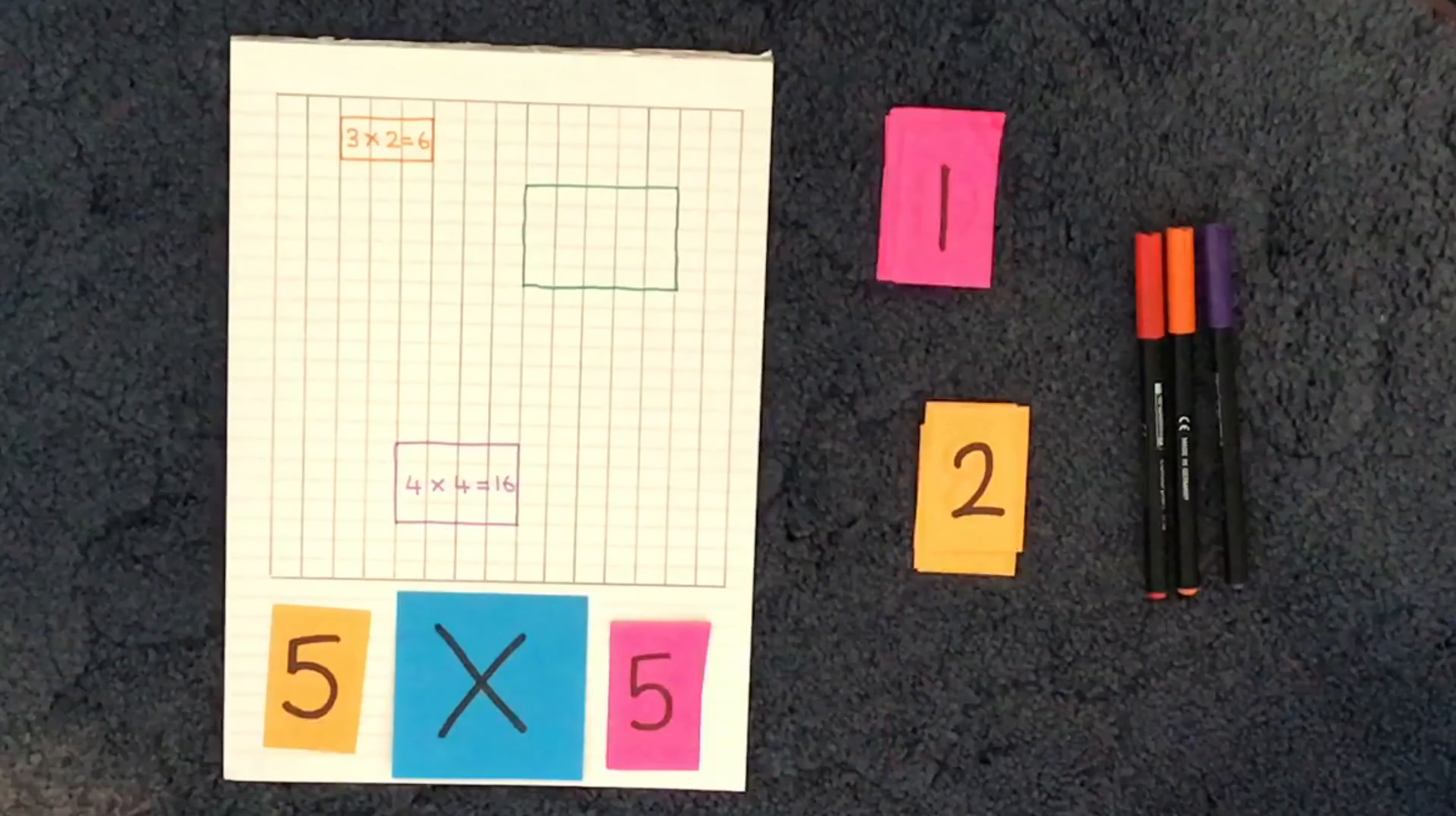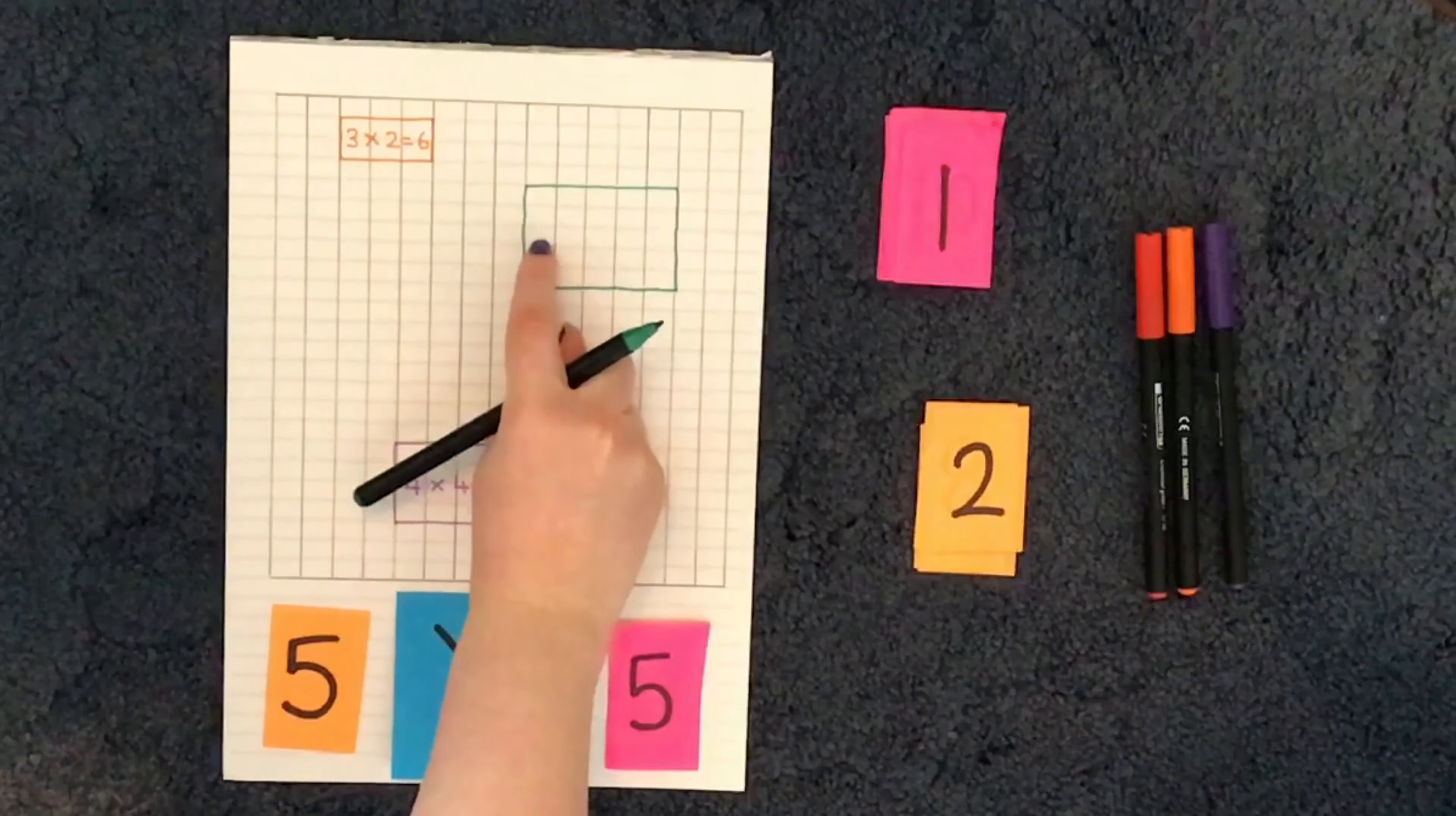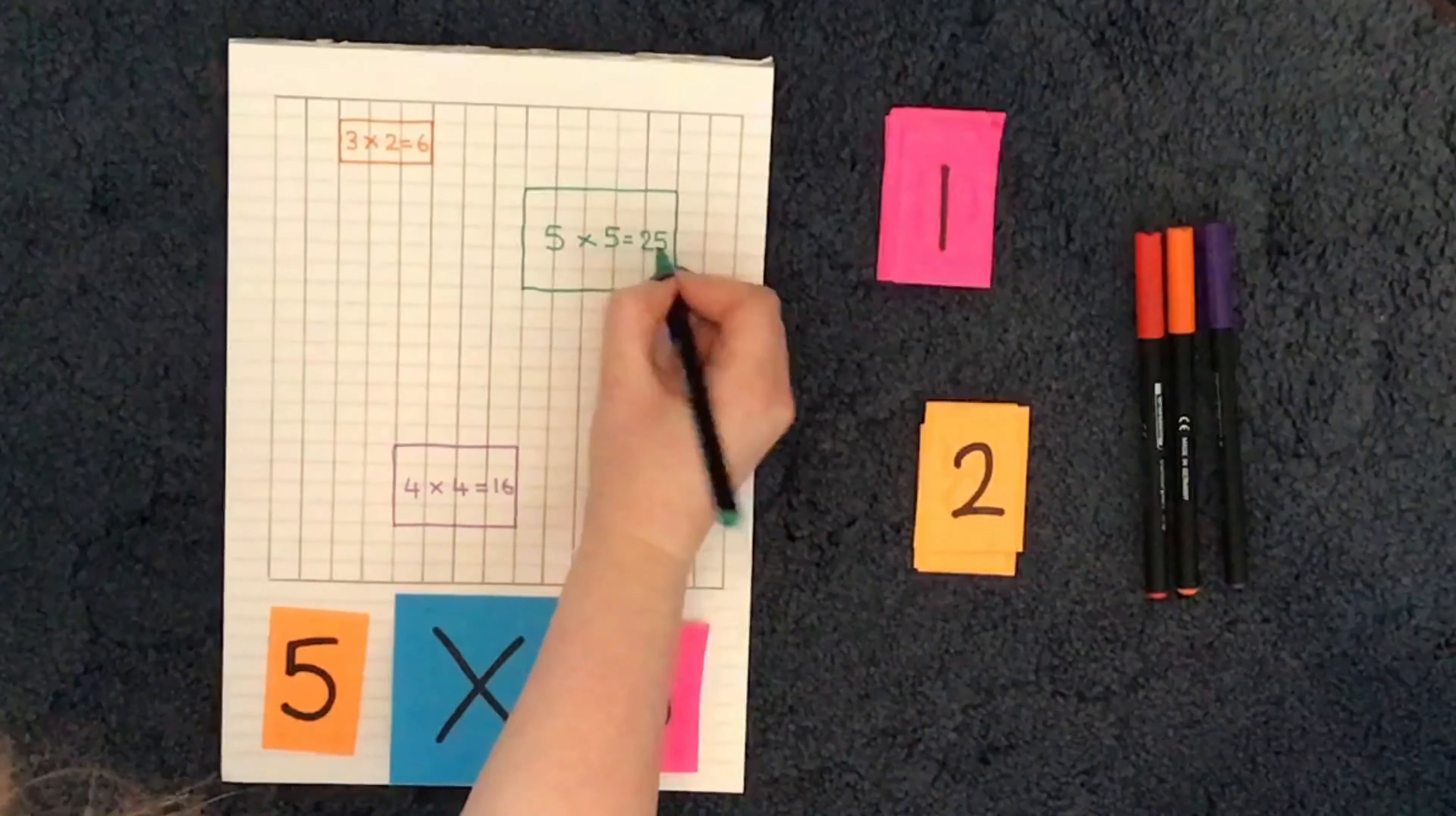Now if I wasn't sure what 5 times 5 was, can you remember what trick you could use to work it out? Just have a moment to think about that. Yes, I could count the squares. So 1, 2, 3, 4, 5, 6, 7, 8, 9, 10, 11, 12, 13, 14, 15, 16, 17, 18, 19, 20, 21, 22, 23, 24, 25. So I know that 5 times 5 equals 25.